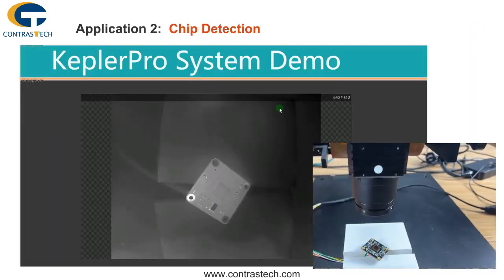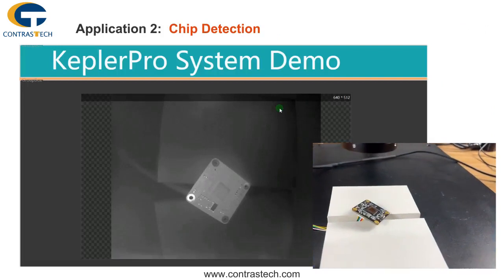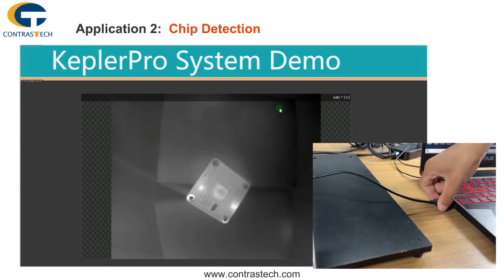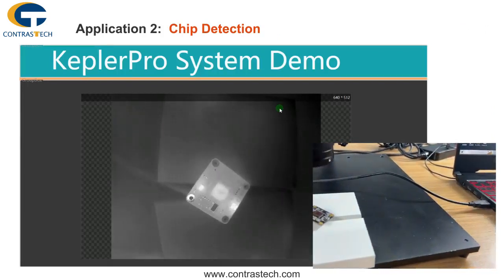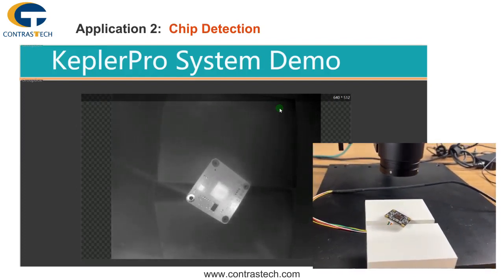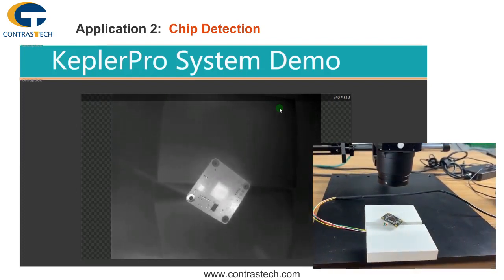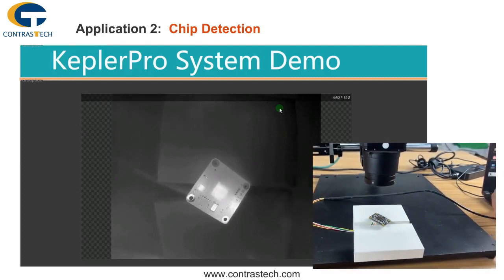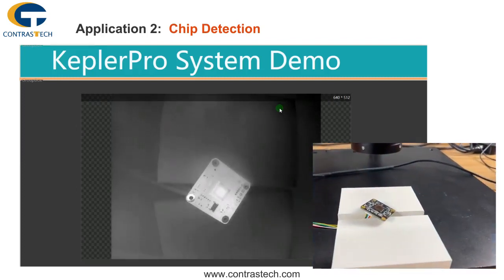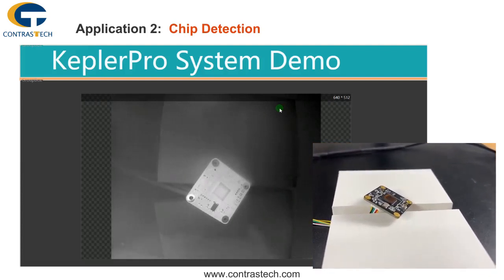When a circuit board is connected to the power supply, the infrared radiation from the substrate can be seen under the longwave infrared camera. If the circuit substrate fails, the power consumption of components on the substrate changes, thereby changing the infrared thermal image of the circuit board and allowing more intuitive location of circuit failures.